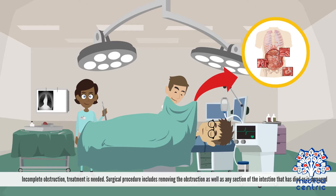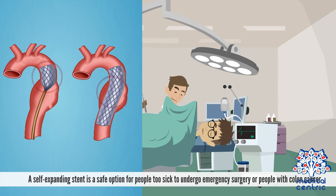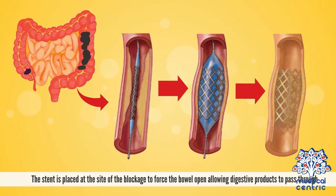In complete obstruction, treatment is needed. Surgical procedures include removing the obstruction as well as any section of the intestine that has died or is damaged. A self-expanding stent is a safe option for people too sick to undergo emergency surgery or people with colon cancer. The stent is placed at the site of the blockage to force the bowel open, allowing digestive products to pass through.